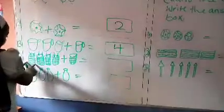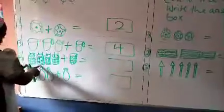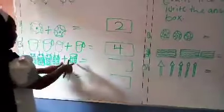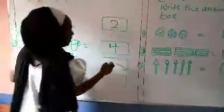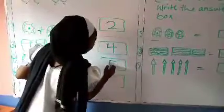Number 4. We have drums here. 1, 2, 3, 4. Plus 1. 1, 2, 3, 4, 5. How many drums are there? 5 drums.